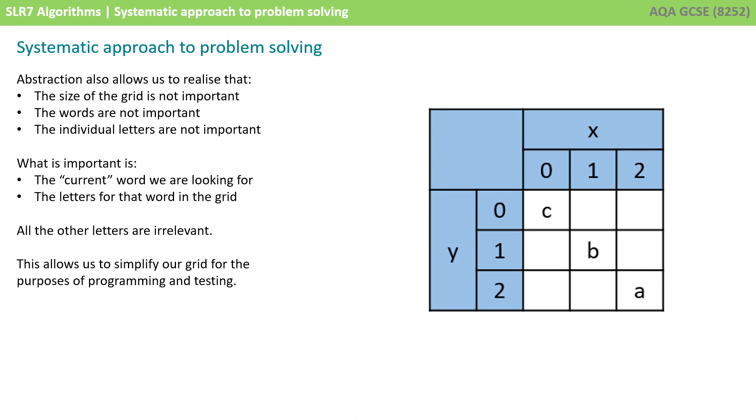Now, if we take the concept of abstraction just a little further, the size of the grid is actually not important. And in fact, even the words that we're looking for are not important and the individual letters are not important. The only thing we're really interested in is the current word we're looking for and the letters for that word in the grid. All the other letters are irrelevant. So, we could simplify our grid for the purpose of programming and testing into something like this.